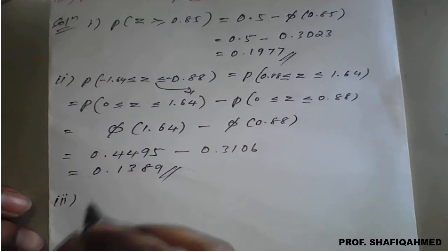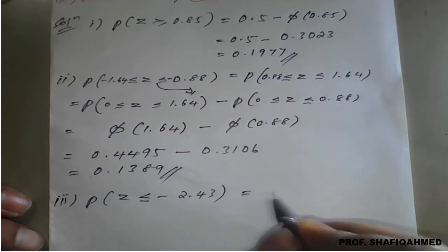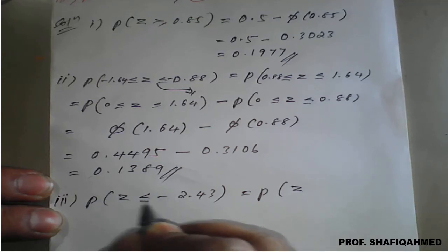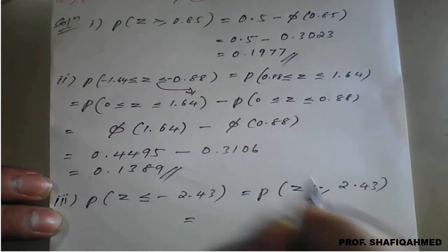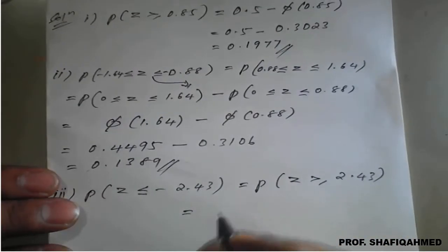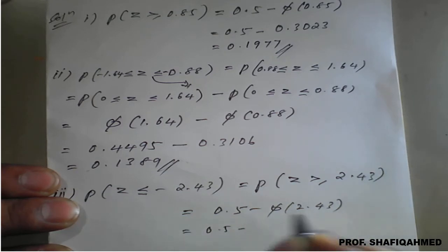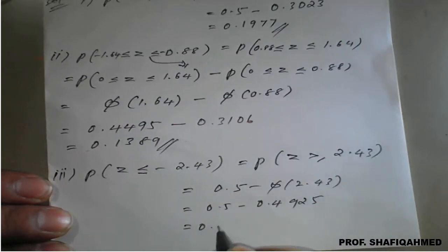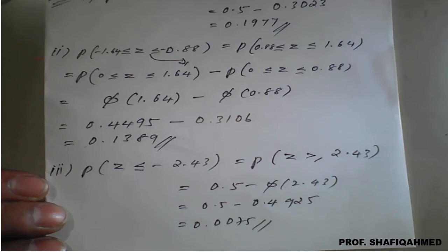Third question: P(Z ≤ -2.43). Since we do not have negative values in the table, we convert using symmetry: P(Z ≤ -2.43) equals P(Z ≥ 2.43), which equals 0.5 minus phi(2.43). From the calculator, phi(2.43) equals 0.4925. So the answer is 0.5 minus 0.4925 equals 0.0075.